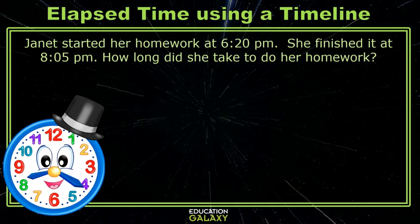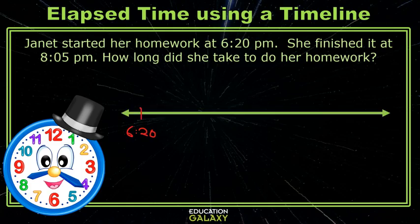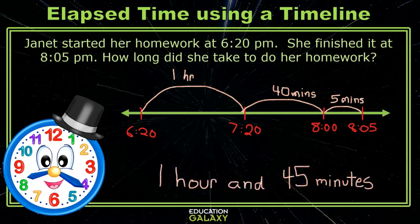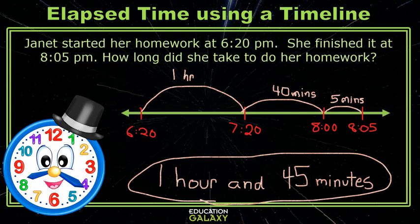We know she started at 6:20 and ended at 8:05. If we start at 6:20 and jump an hour, we will get 7:20. Then we can jump 40 minutes to get to 8 o'clock and then another 5 minutes to finish at 8:05. In total, we have gone 1 hour plus 40 minutes plus 5 minutes, which adds up to 1 hour and 45 minutes, which is our answer.